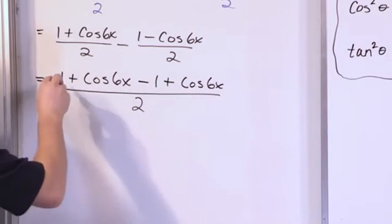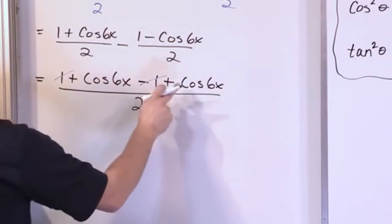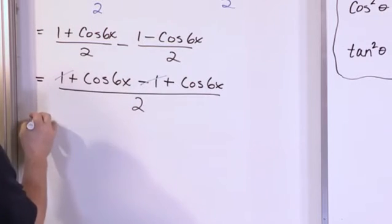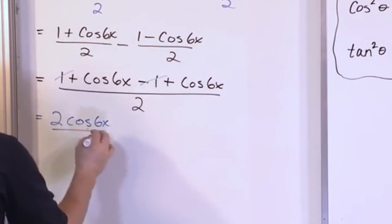So what you see right away is you have a plus 1 and a minus 1, they disappear. And then here you have cosine 6x and cosine 6x, they're added together, so you get 2 times cosine 6x over 2.